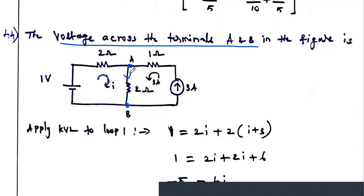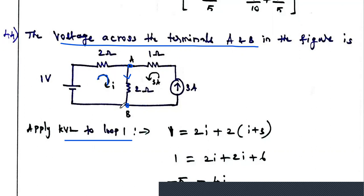What is the actual current flowing through this 2-ohm resistor? It is the sum of current I plus 3 amps, since this 2-ohm resistor is common to both loop 1 and loop 2. That is why the current flowing through it is I plus 3 amps. To find the voltage, we first need to find current I, so we write KVL — Kirchhoff's Voltage Law — for loop 1.